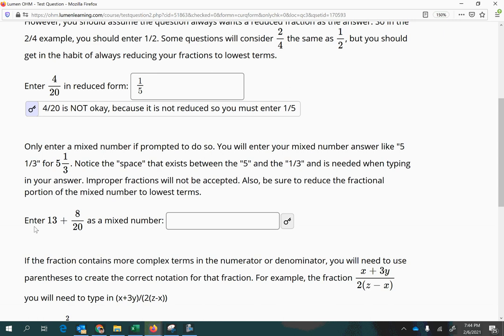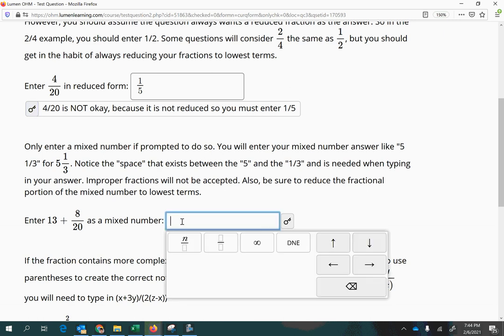Okay, so here we're entering 13 plus 8 over 20 as a mixed number. So that would be 13 space, and then 8 divided by 20.